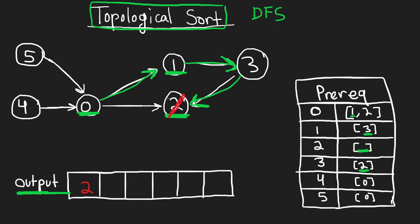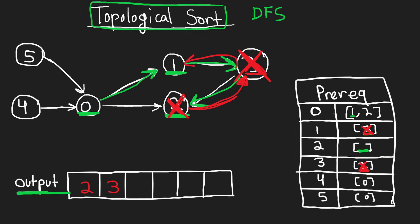We cross out two so we never have to visit it again — no need to add a course to our output twice. Now in depth-first search we go back to where we came from: three. Three no longer has any prereqs since we've already visited two, so we cross it out and add it to our output. Then we go back to one — we just visited three, so one has no prerequisites remaining, and we add it to our output. Then we go all the way back to zero.